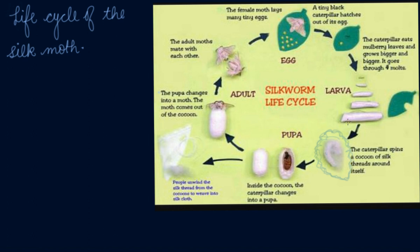These are the larvae — the caterpillars. In order to grow, they secrete fiber and weave it around themselves. This fiber around themselves is known as the cocoon. At this stage, when they are inside the cocoon, they are known as pupa.